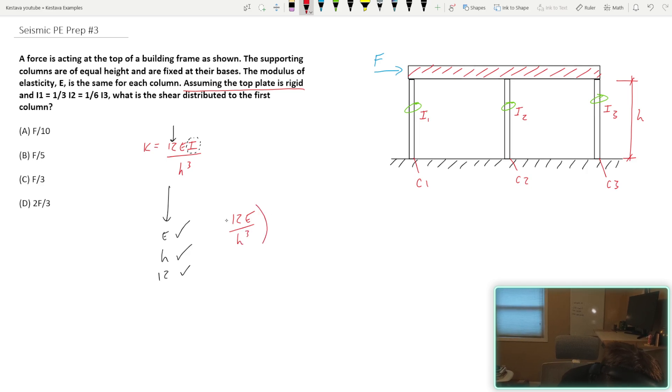So what you can do is you can actually pull out 12E over H cubed from your equation. And now, because that's all just constant, it's the same for all three of the columns. So you can just toss it, get rid of it. And we can simplify it to simply say the stiffness of each column X is just equal to the difference of I's between the columns. And we'll say IX. And we've been given the information on all of the I's related to one another, which is an important thing for the three columns. So that's great.